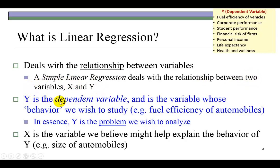Y is the dependent variable in that relationship, and therefore is the variable whose behavior we wish to model. For example, you may be interested in modeling the fuel efficiency of cars. You could also be interested in looking at corporate performance, student performance, the financial risk of firms, personal income of citizens, life expectancy of babies born in a certain community, or health and wellness of individuals in a particular city.